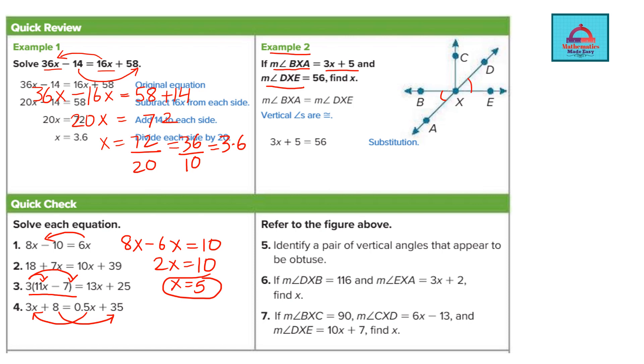Now these two angles are going to be equal because they are vertically opposite angles. So you can put these two equations as same or equal. Now we solve for x. Move 5 to the other side it becomes 56 minus 5 which is 51.